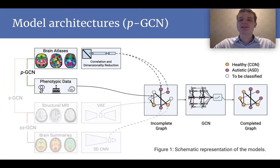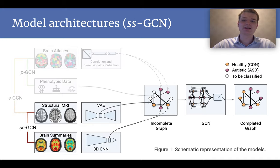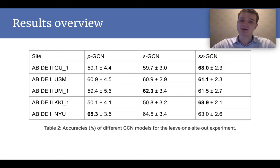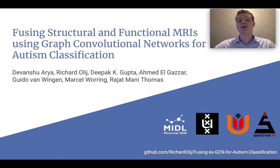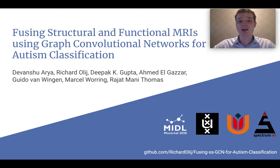we combine various machine learning models into a larger architecture in such a way that it intuitively makes sense and of course beats state-of-the-art methods. Are you interested? You can read all about it in the paper 'Fusing Structural and Functional MRIs Using Graphical Convolutional Network for Autism Classification.' Have fun!